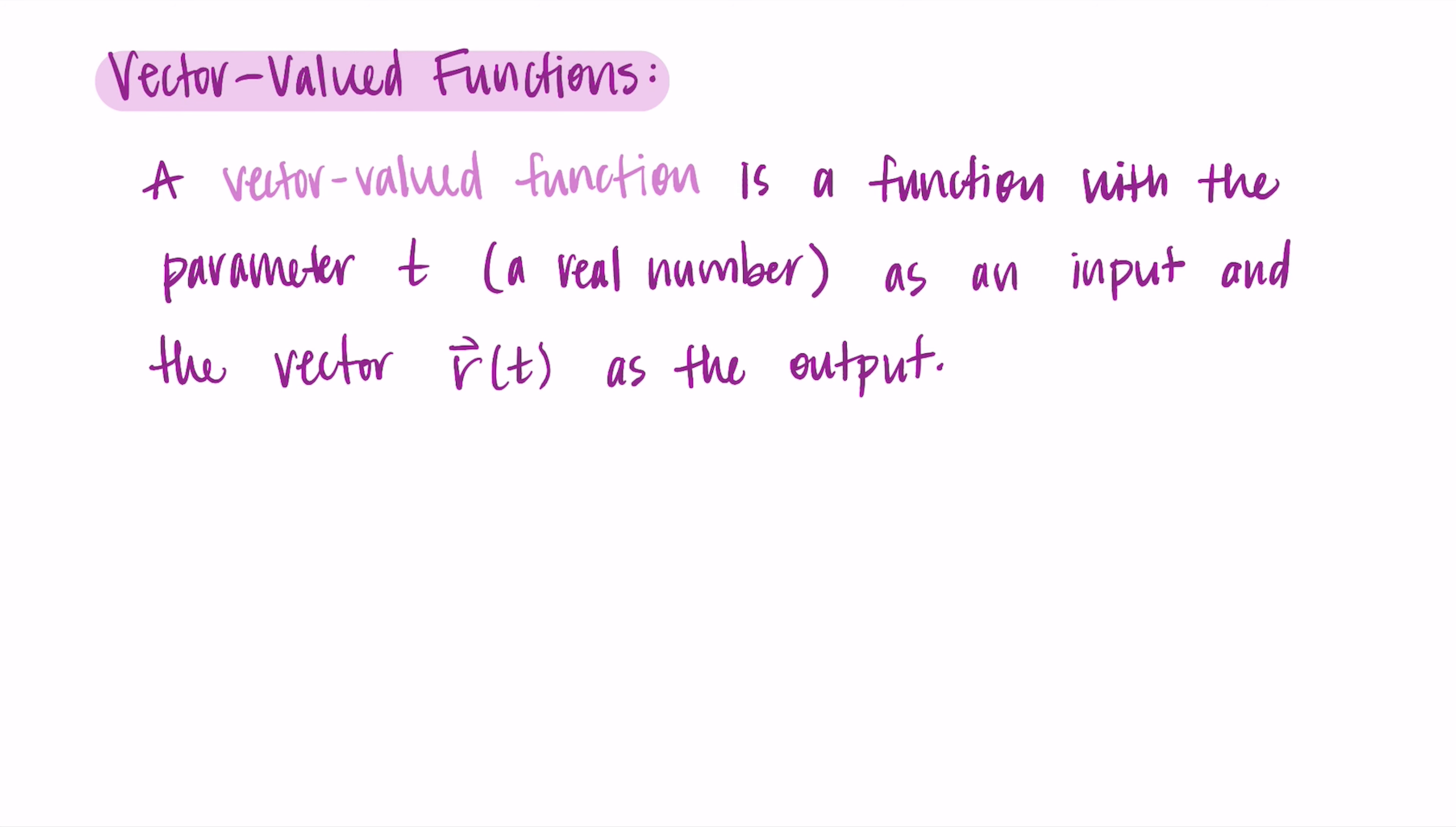So like you might be used to in two dimensions, we might input x and output a y. Here we're inputting a t, which is a real number, and we're outputting a vector. So that's what makes this a little unique and why it's called a vector-valued function, and that we're inputting a number and we're outputting a vector.